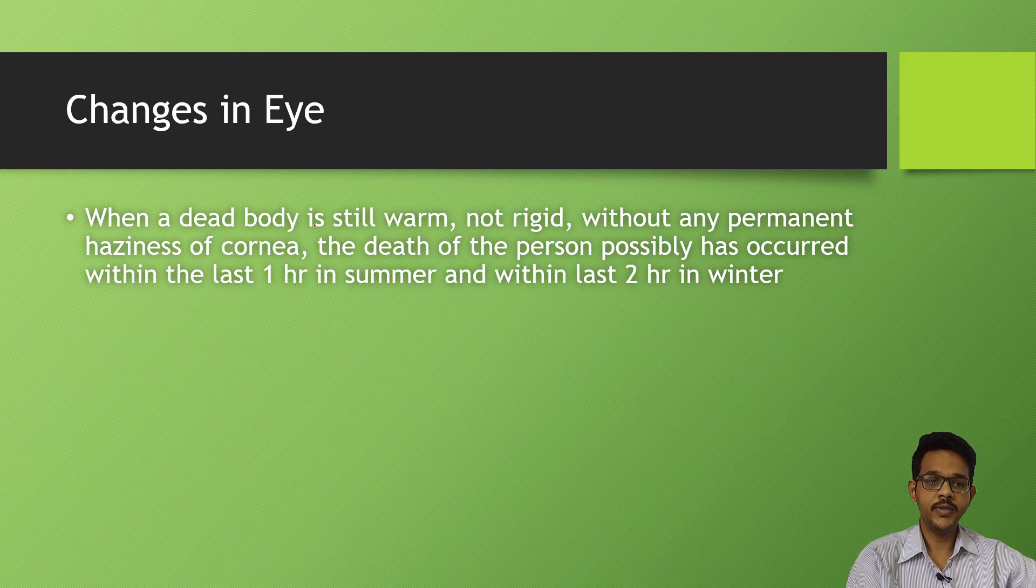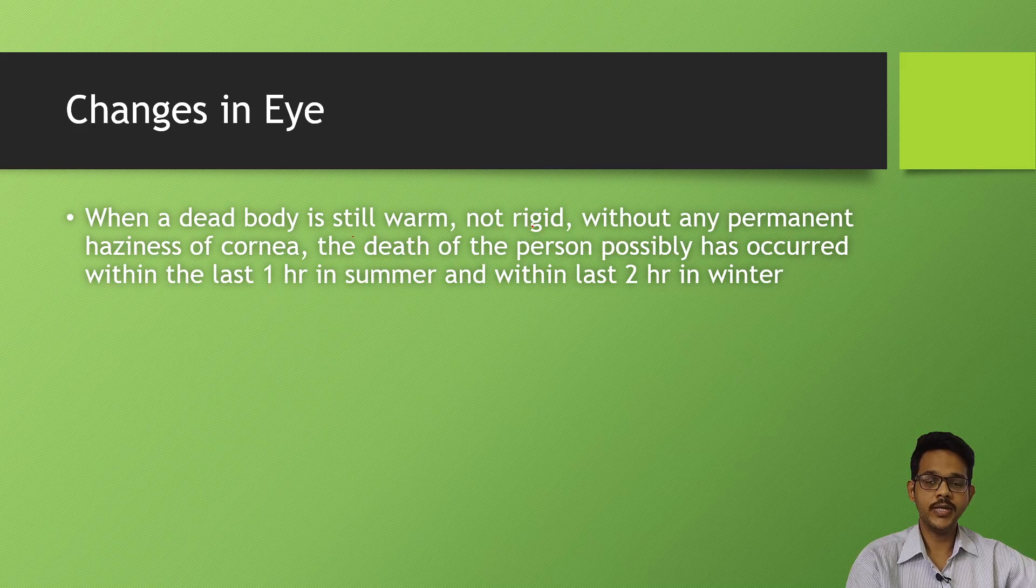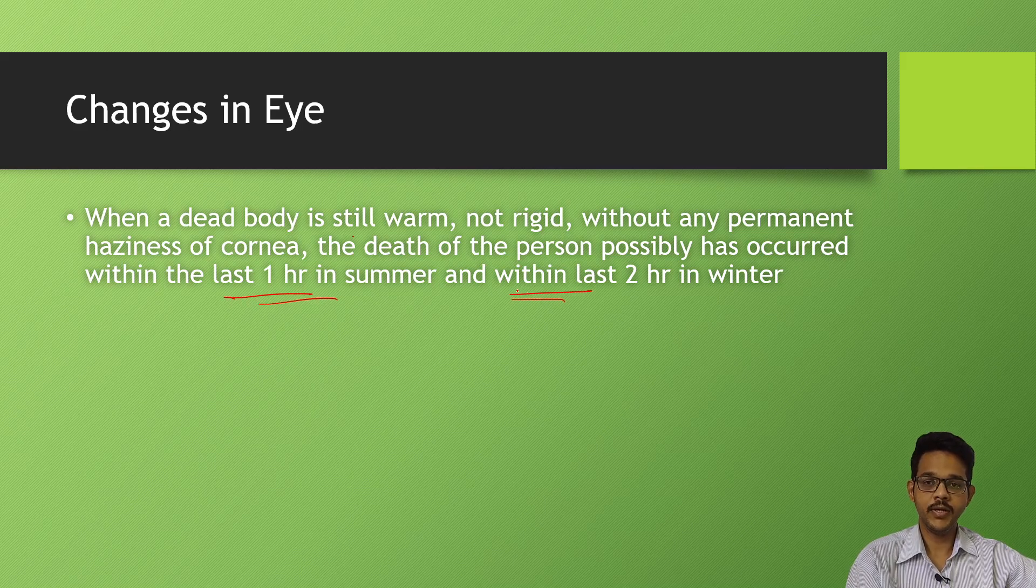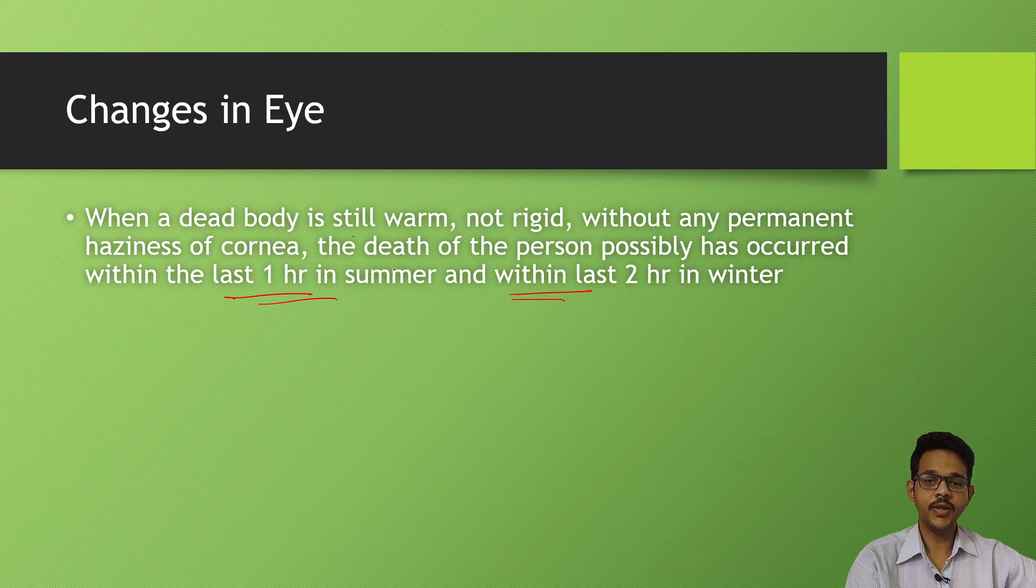Coming to changes in the eye: When the dead body is still warm, not rigid, without any permanent haziness of cornea, death of the person possibly occurred within one hour in summer and within two hours in winter. If there is no haziness in cornea, it indicates the body is likely within one hour.